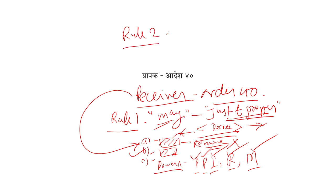Ab Rule 2 mein dekhiye — Rule 2 mein remuneration ki baat hai. Remuneration — kisi ko bhi aap jab appoint karoge, receiver appoint karoge, toh praapak kyaa banega? Ou receiver kyaa banega? Uska apna bhi kaam hai, ghar ka. Toh aap receiver tabhi banega jab usko koi remuneration dengey. Rule 2 mein likha hua hai — isko remuneration bhi court fix karegi. Or jitna remuneration court fix karegi, itna isko remuneration milta rahega. Us remuneration mein kaam karayega.